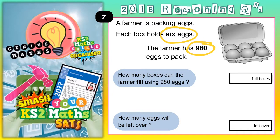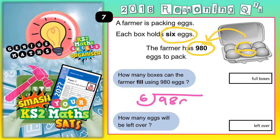So in one box there's 6 and he's got 980. We need to see how many of these 6s go into 980. How many boxes can the farmer fill using 980 eggs? In other words, how many 6s — if you divide 980 by 6 using the bus shelter method — the answer will be how many boxes we can pack.